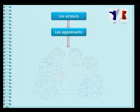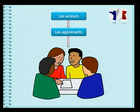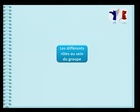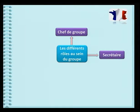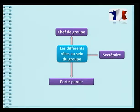D'habitude, en classe, tu discutes avec tes camarades en groupe de deux à cinq apprenants. Il est aussi nécessaire que tu saches que le groupe est appelé à répartir les tâches. Pour cela, tes amis et toi, vous êtes appelés à choisir un chef de groupe. Ensuite, ce chef de groupe vous attribue des rôles tels que secrétaire, porte-parole, chronomètreur, entre autres.